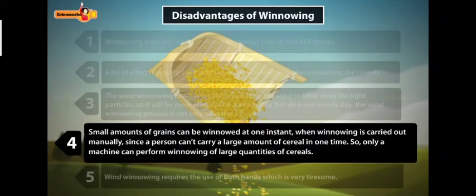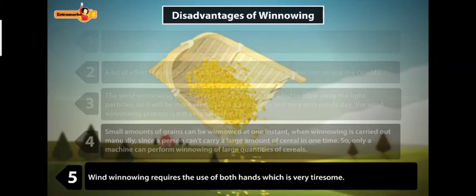Small amounts of grains can be winnowed at one instant when winnowing is carried out manually. Since a person can't carry a large amount of cereal at one time, only a machine can perform winnowing of large quantities of cereals. Wind winnowing requires the use of both hands, which is very tiresome.